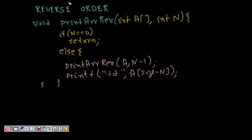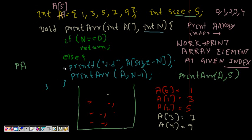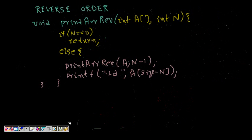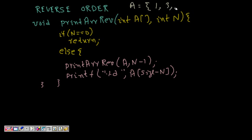Now can we print the array in reverse order using recursion? If we just interchange the two lines — moving the printf after the recursive call instead of before — the array will be printed in reverse order. Let's see why.